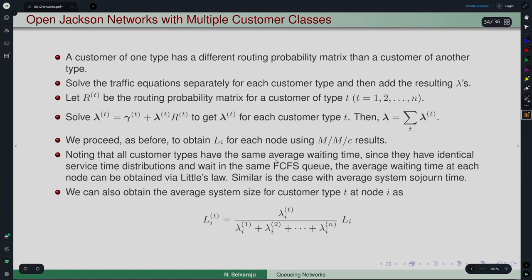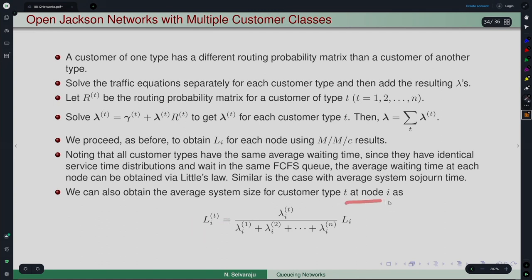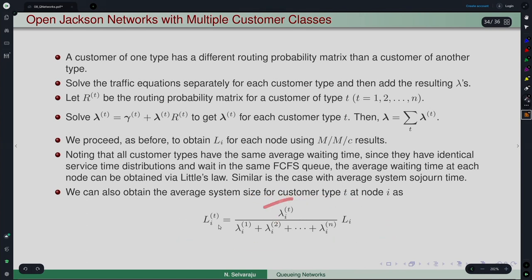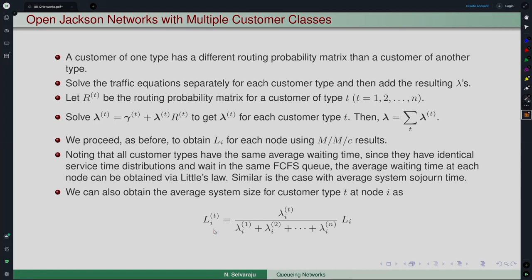Since they have identical service time distributions and wait in the same FCFS queue, the average waiting time at each node can be obtained via Little's law, and similarly the system-wide average sojourn time. In addition to the system-wide measure, for each customer type T at node i, the average number of type-T customers in node i is obtained as a proportion: λᵢᵀ / λᵢ times Lᵢ. This gives the class-wise mean number in system at each node.